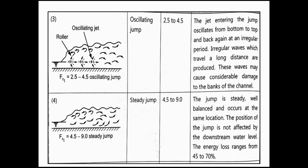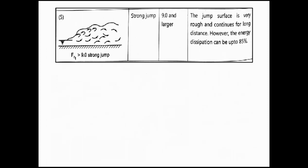The strong jump occurs when the Froude number is 9 or larger. The jump surface is very rough and continuous over a long distance; however, energy dissipation can be up to 85 percent, meaning we can minimize the energy by up to 85 percent.